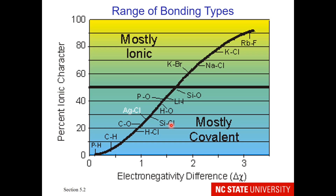But there are some outliers. You may notice that silver chloride is under the mostly covalent area of the curve, even though we would predict it to be ionic since silver is a metal and chlorine is a nonmetal. To explain this, we need to look further into electronegativity trends.